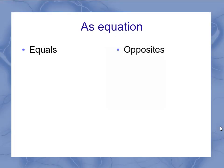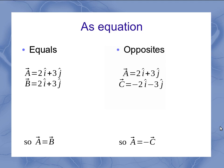If I represent my vectors as equations, it's really easy to see that two equal vectors are exactly equal to each other — the i's and the j's have to both match up. The same thing applies for opposite vectors: I have to have exactly the same numbers but opposite signs on each and every term.